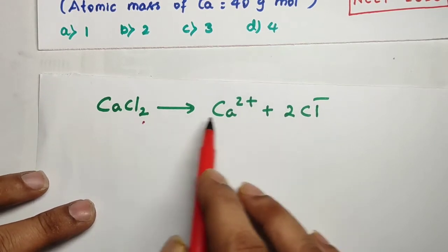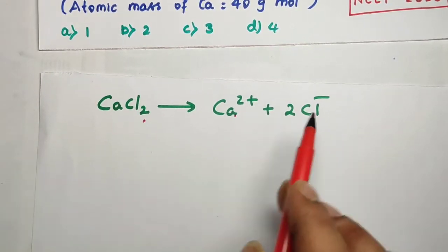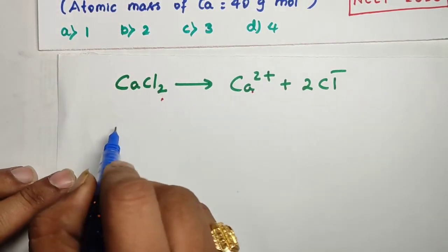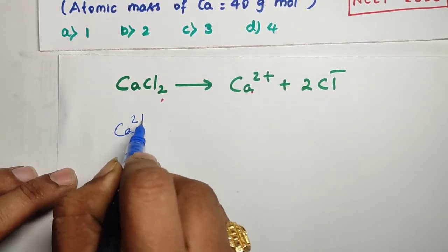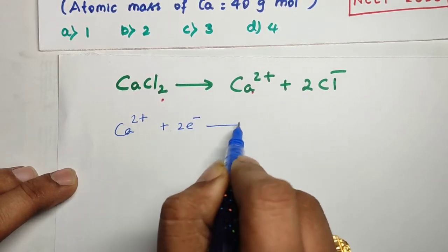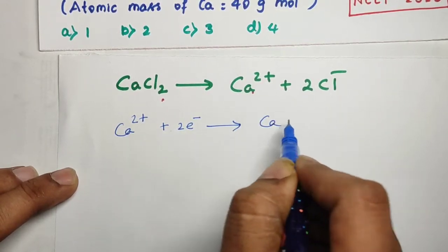CaCl2 contains Ca2+ ion and Cl- ion. Here Ca2+ one mole of Ca2+ gains two moles of electrons to produce one mole of Ca.